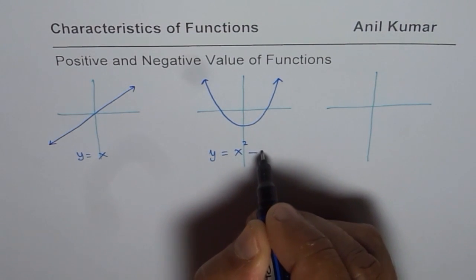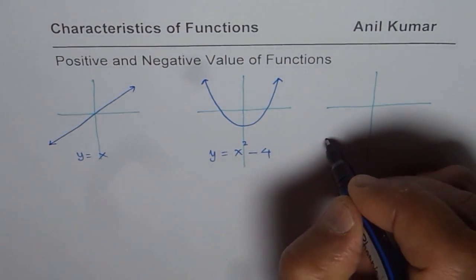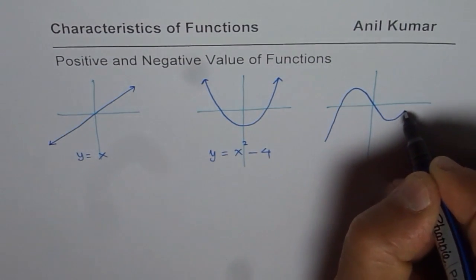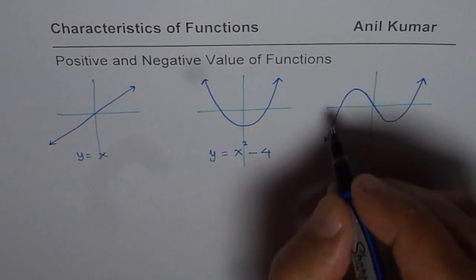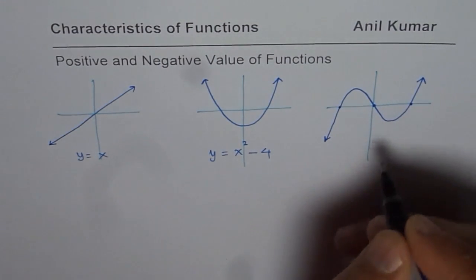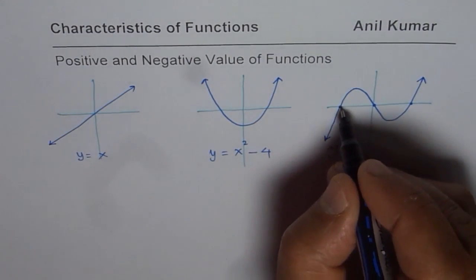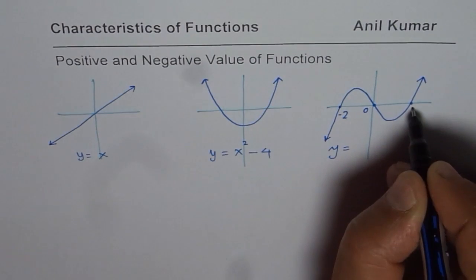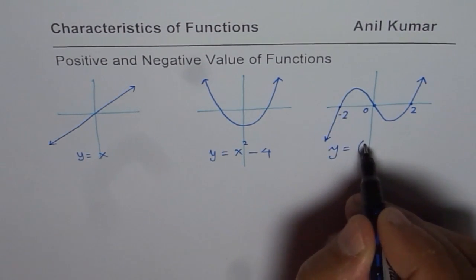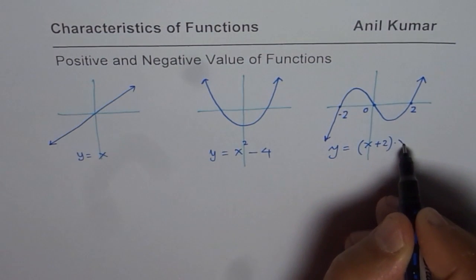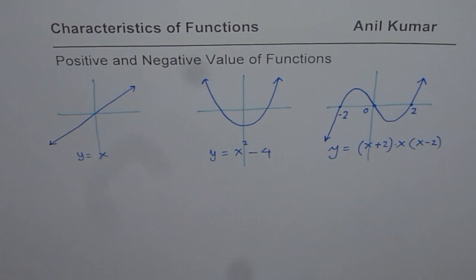Let us say minus 4, since it is moving downwards. And here let me sketch a cubic function — kind of symmetric about the origin. These zeros are at minus 2, 0, and 2. So we could write the equation as y equals x times x plus 2 times x minus 2. That becomes the equation of this particular graph.